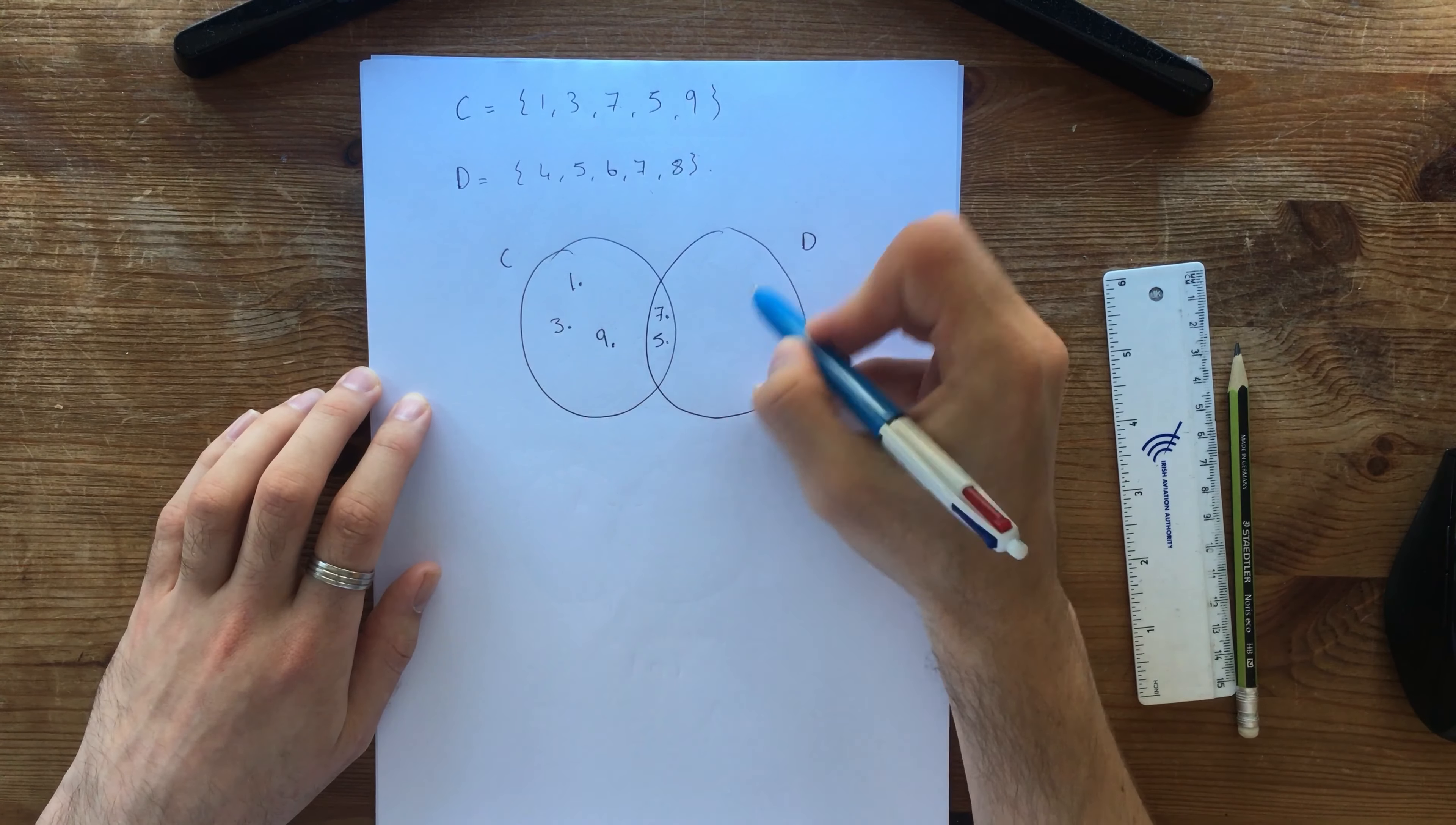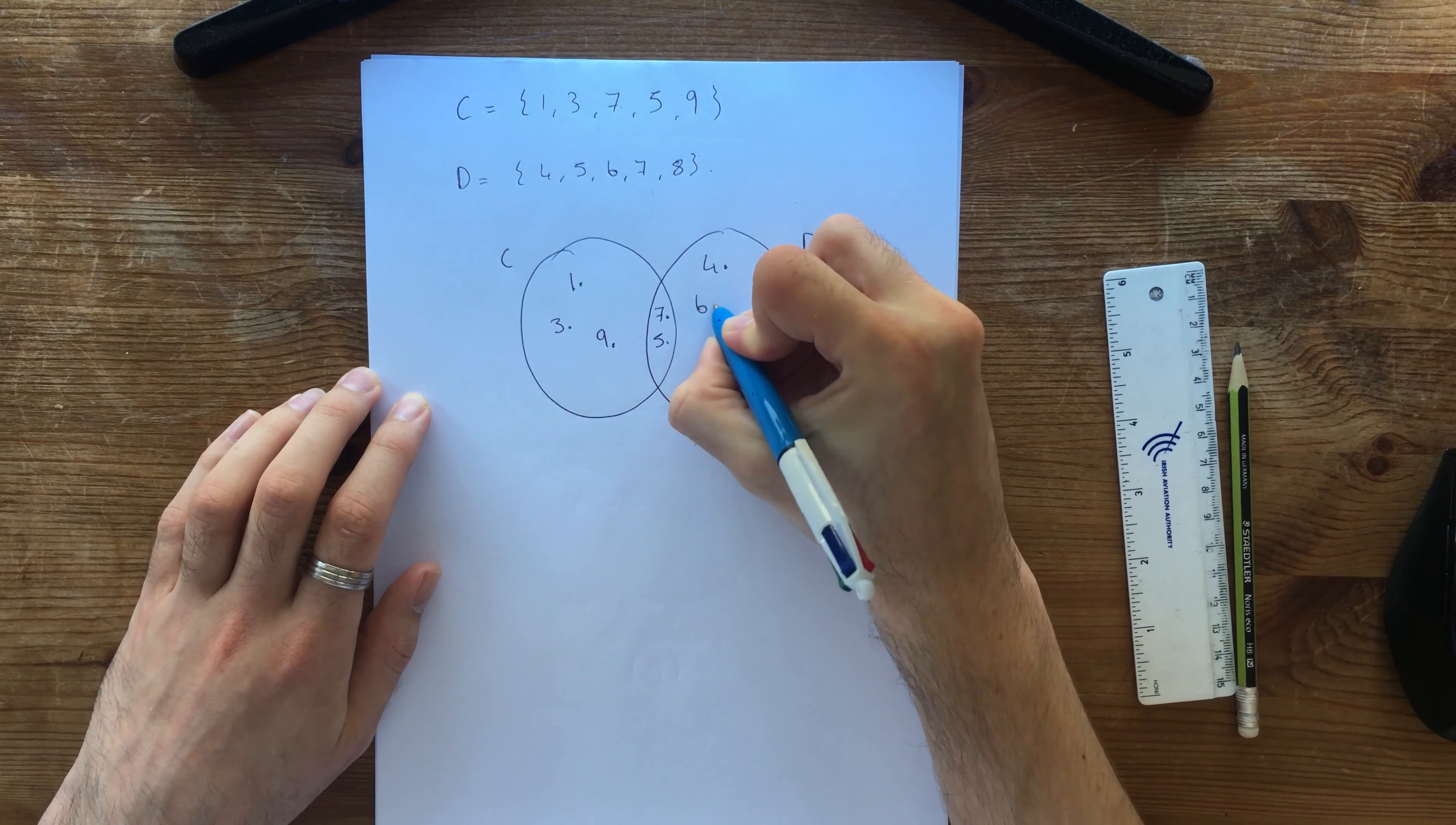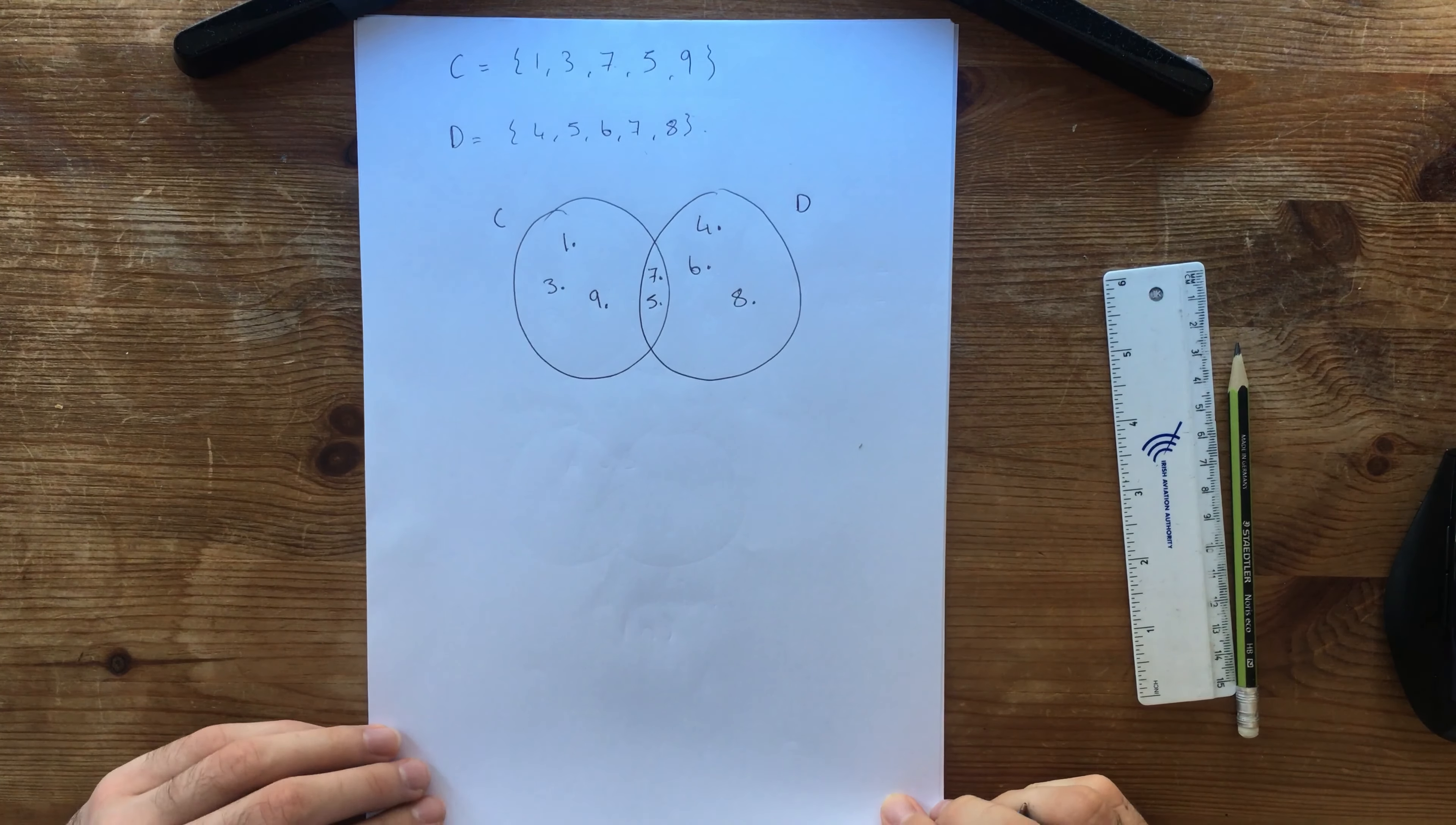4, 5, 6, 7 and 8. So 4 we haven't seen it yet so we can put it there. 5 is already here. 6 we can put in. 7 is already there and 8 we'll put in. Okay. So let's do a few things first.